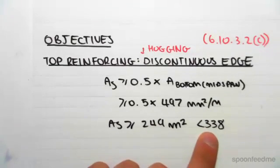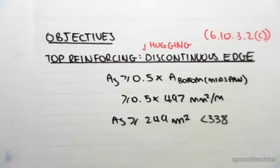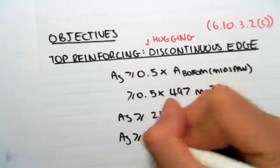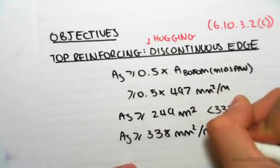You can see that the minimum steel requirement we need is 338, but this is giving us 249. Therefore the amount of steel we need is going to be the minimum steel requirement of 338 millimeters squared per meter.